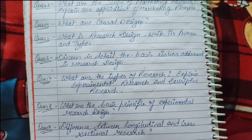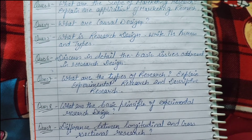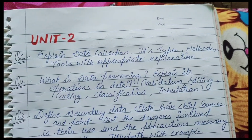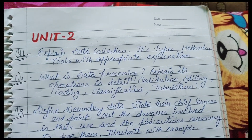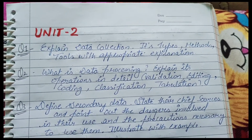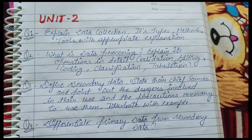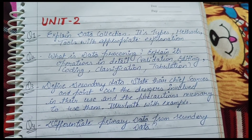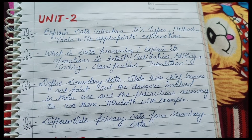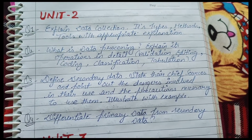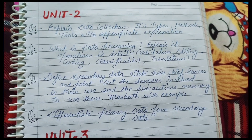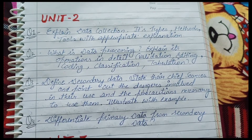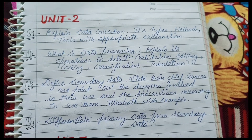Next, the second unit. In the second unit there are important questions. Question number first: explain data collection and its types, methods, and tools with appropriate explanation. Question second: what is data processing? Explain its operations in detail — validations, editing, coding, classification and tabulations.